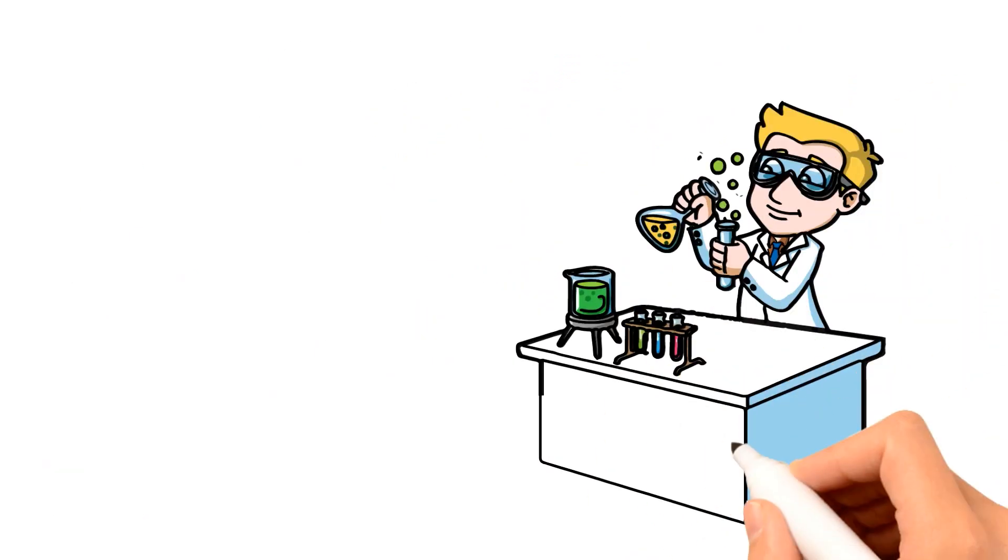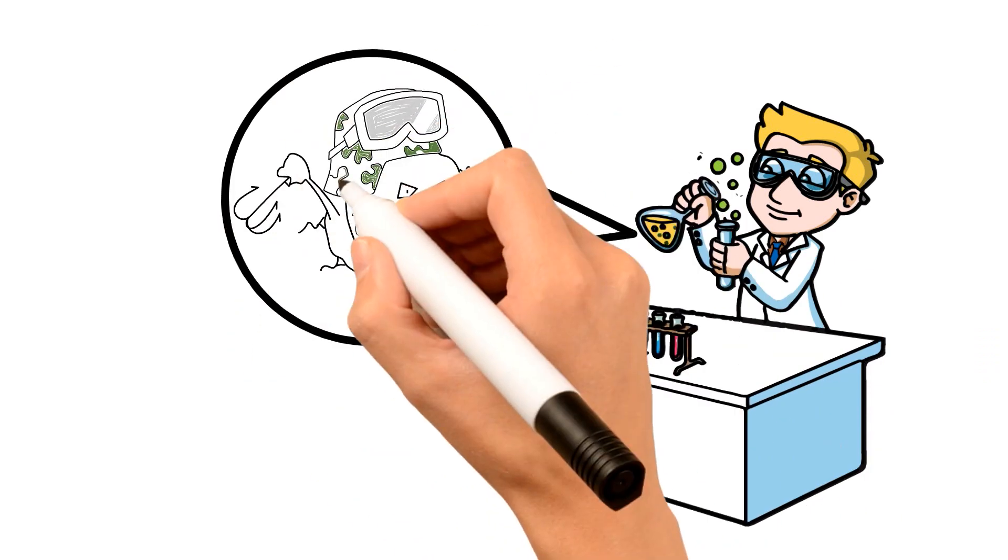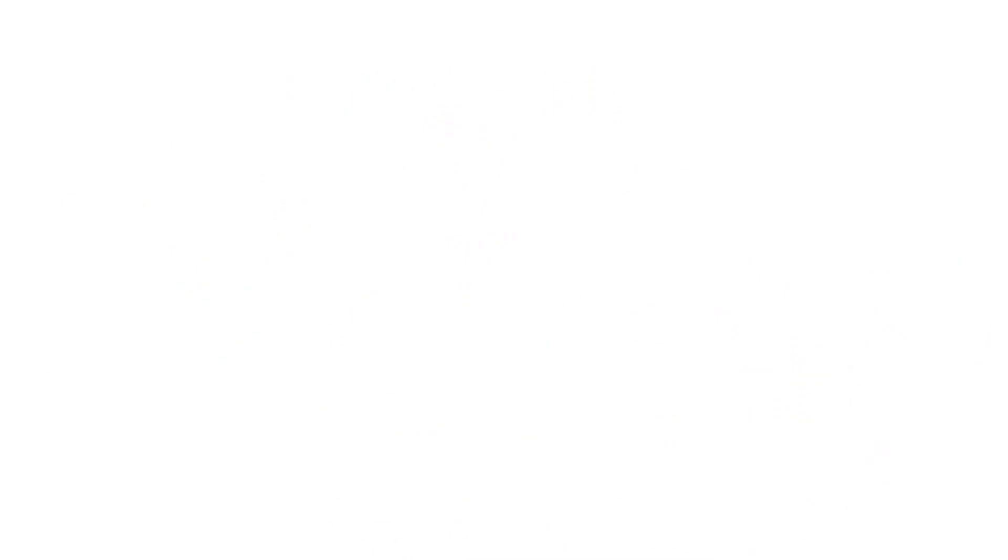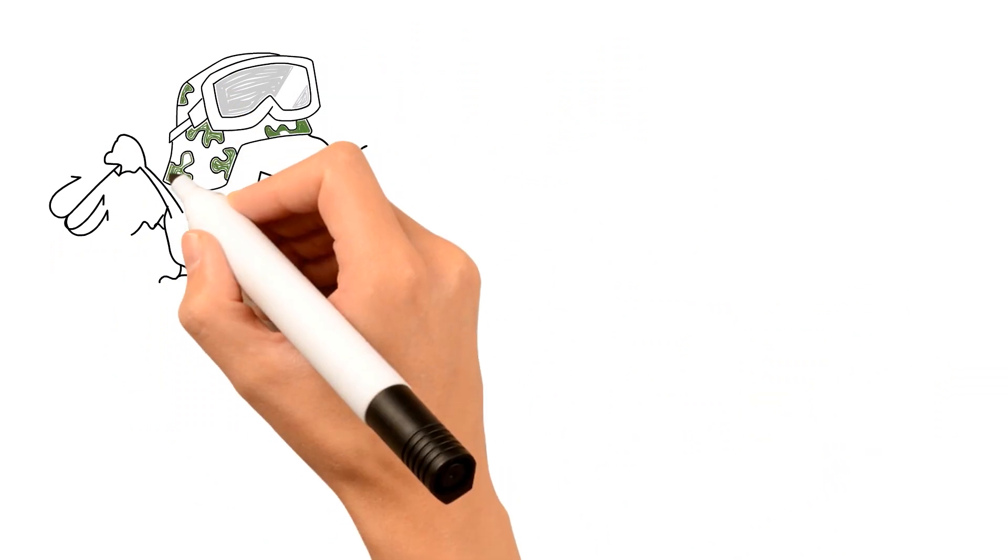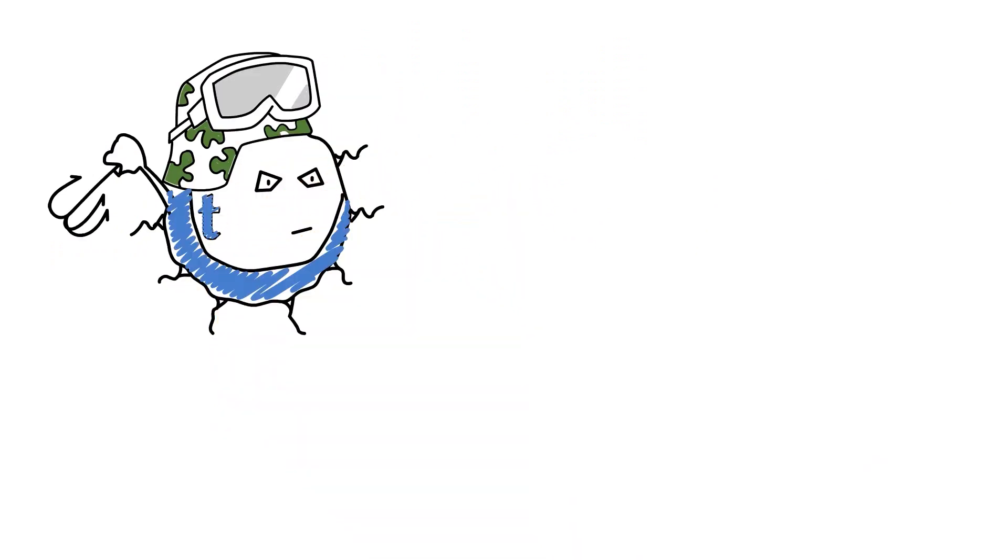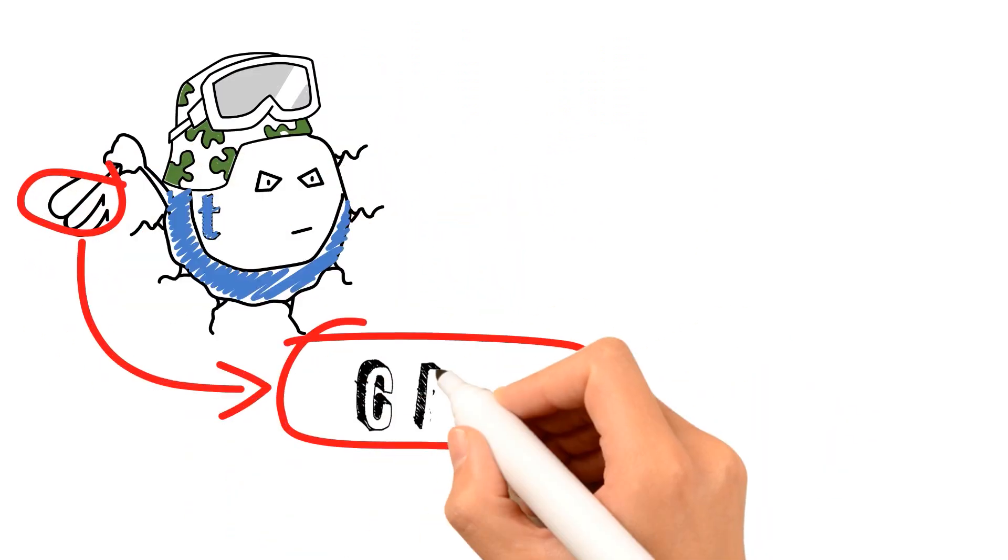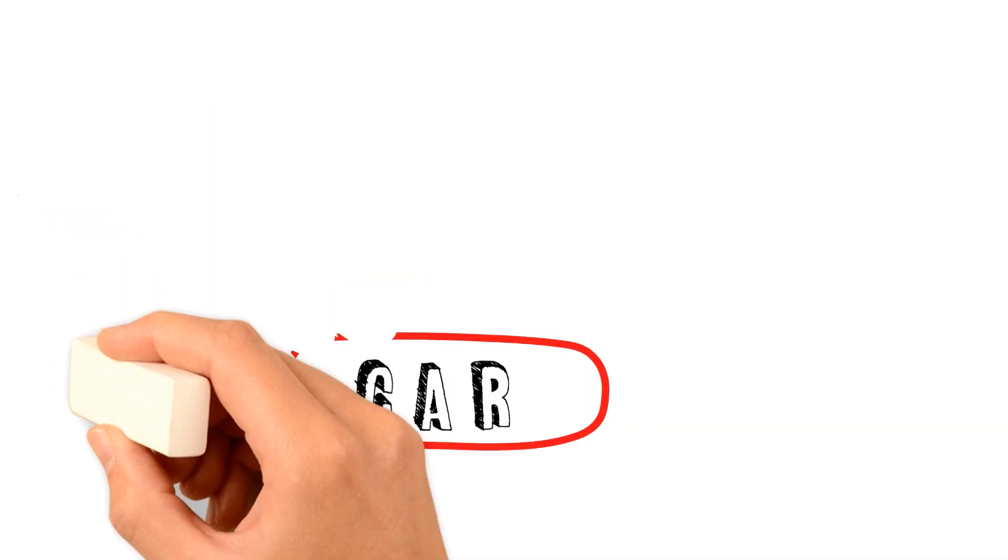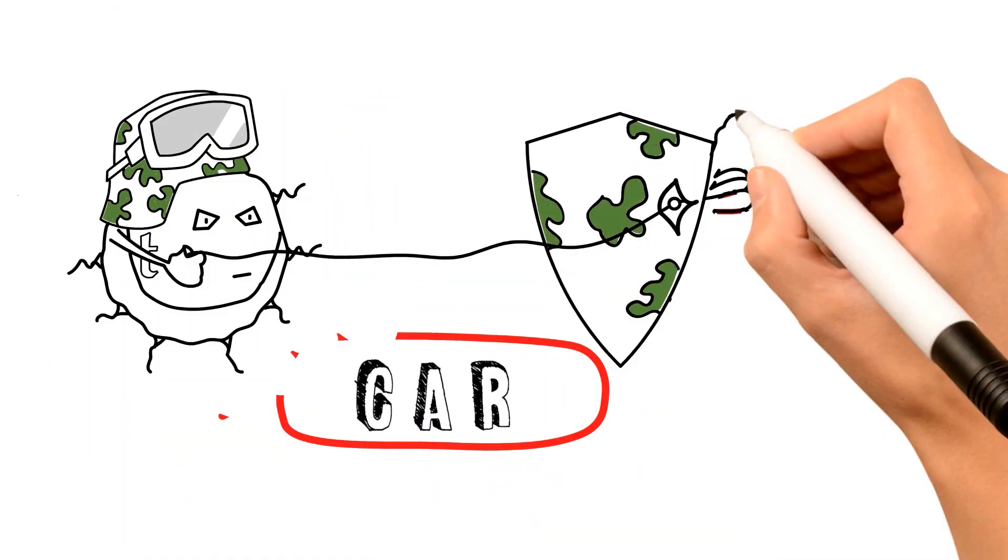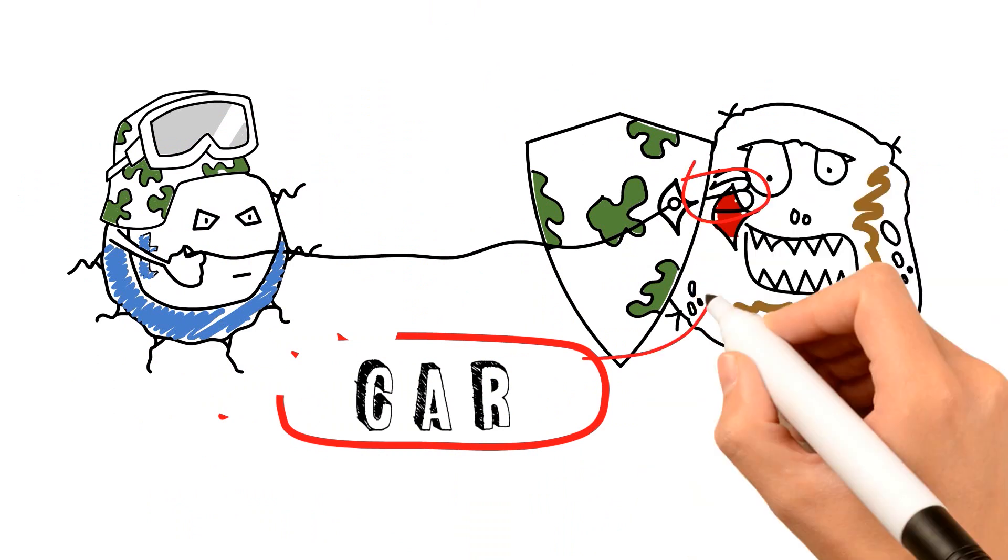Now, scientists can collect these T-cells or soldiers from a patient's blood and give them an upgrade. Researchers genetically modify the patient's T-cells by adding a chimeric antigen receptor or CAR. This receptor is like a GPS that directs the T-cells to target and kill cancer.